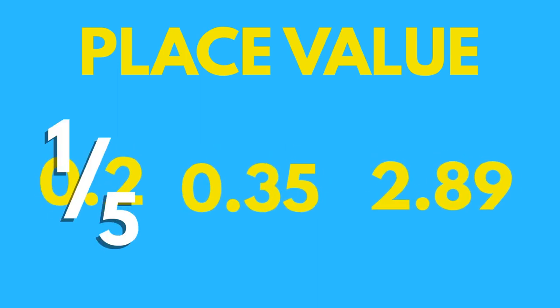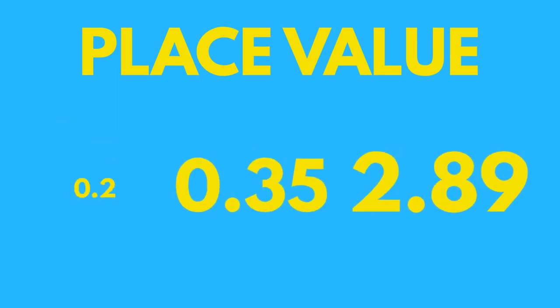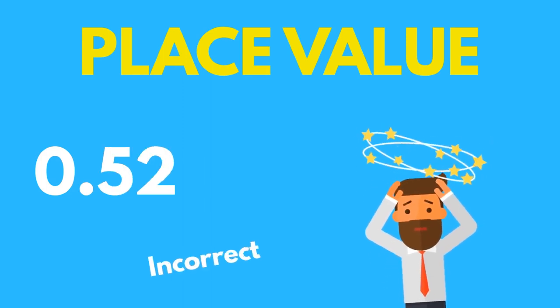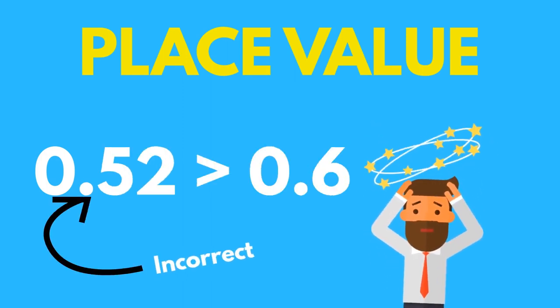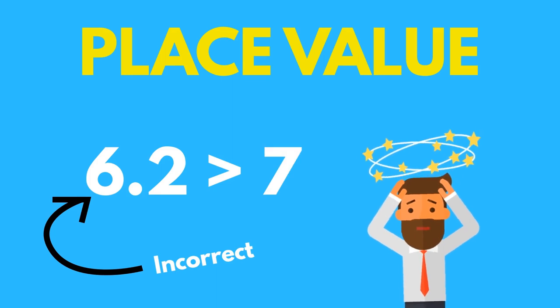Understanding place value in decimal numbers is important when converting between fractions and decimals. This approach lets us deal with lots of misconceptions such as 0.52 being larger than 0.6 or 6.2 being larger than 7.